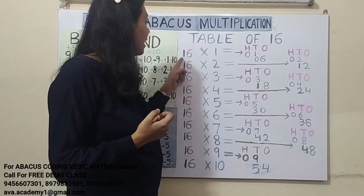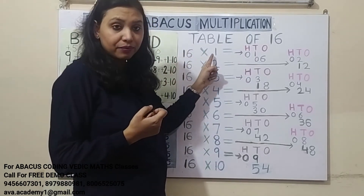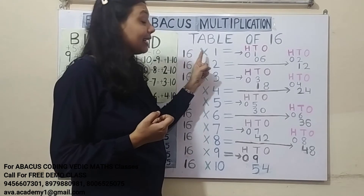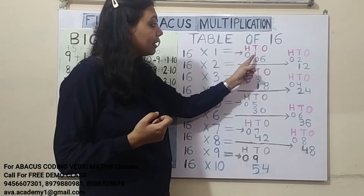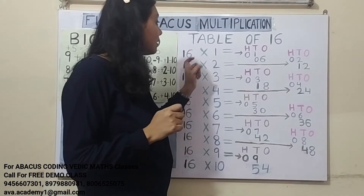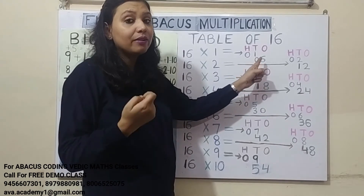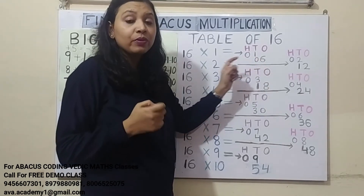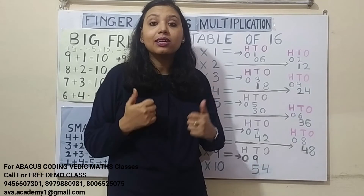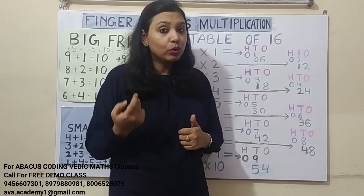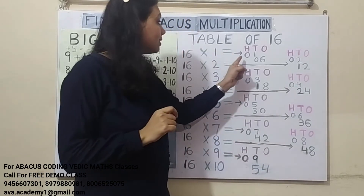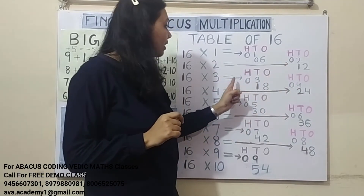The second rule is: we have to multiply the first number and represent the result in 100's and 10's. Then we multiply the second number and represent those results in 10's and 1's. The third rule is: if the answer comes in 1 digit, we have to convert it into 2 digits by putting a 0. The answer will always come in either 1 digit or 2 digits — never 3 digits. If it's already 2 digits, we don't need to do anything; if it's 1 digit, put a 0 to make it a 2-digit number.